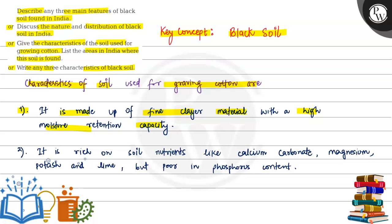The second point says, it is rich in soil nutrients like calcium carbonate, magnesium, potassium and lime but poor in phosphorus content.